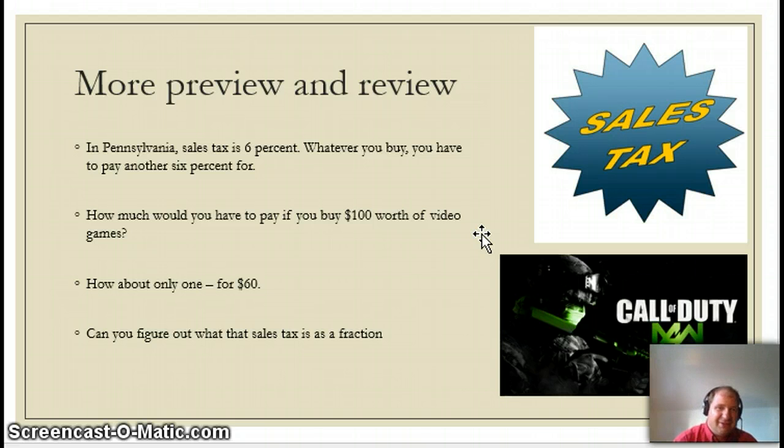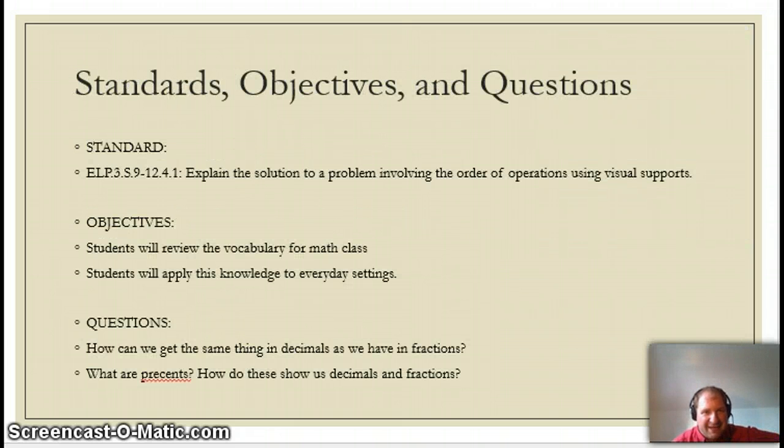So if you bought $100 worth of video games, that's what you pay: $106. $6 is your tax. So let's say you just buy one Call of Duty game for $60. How can I figure that out? And can we figure out the sales tax as a fraction? We actually can. So for some of you, this will be a review of things you know. Others a preview.